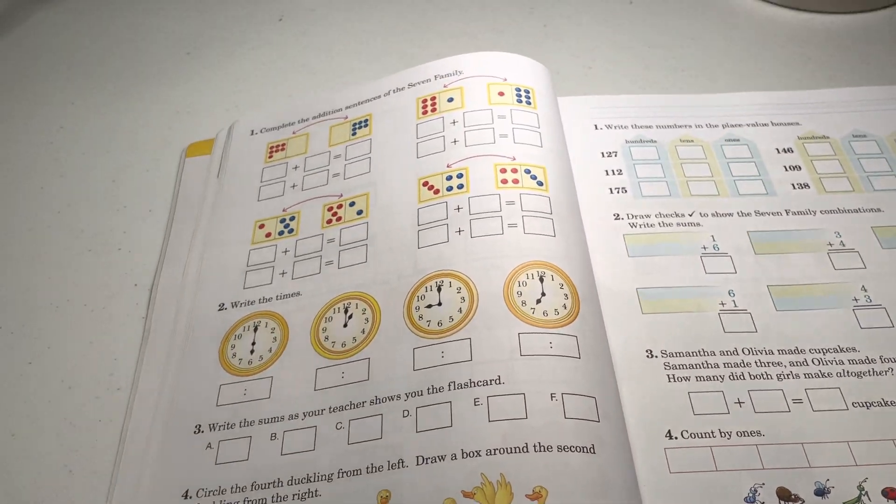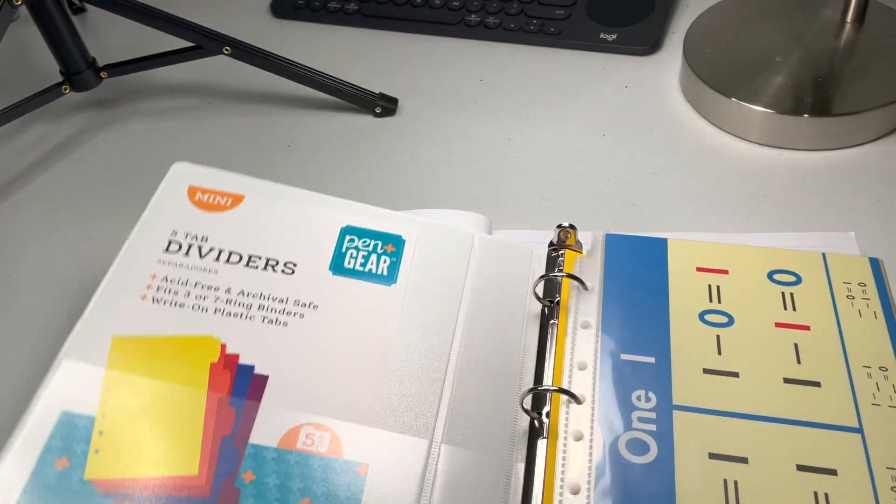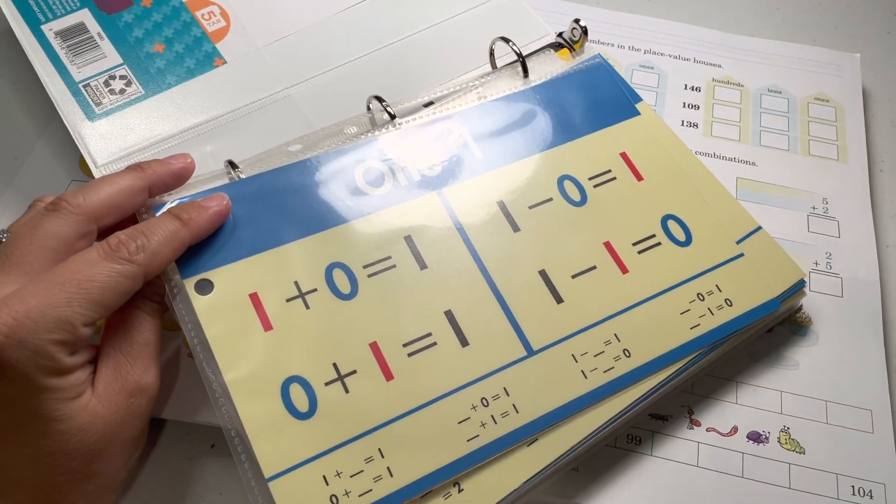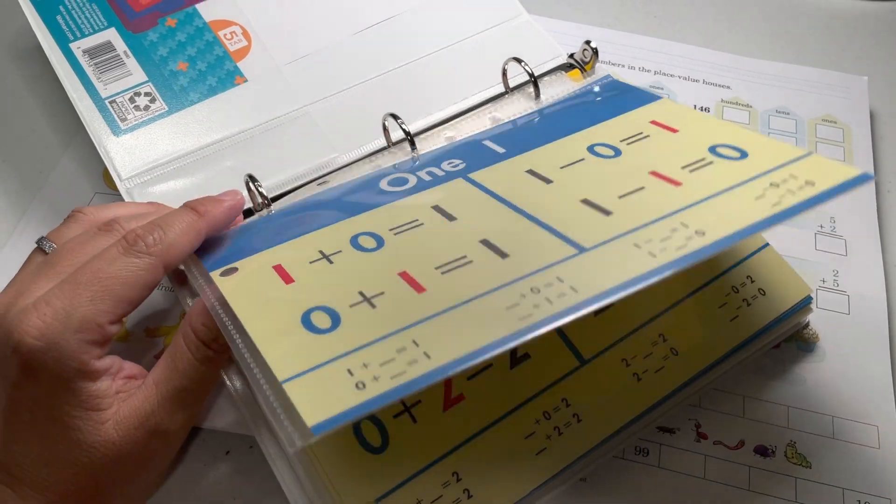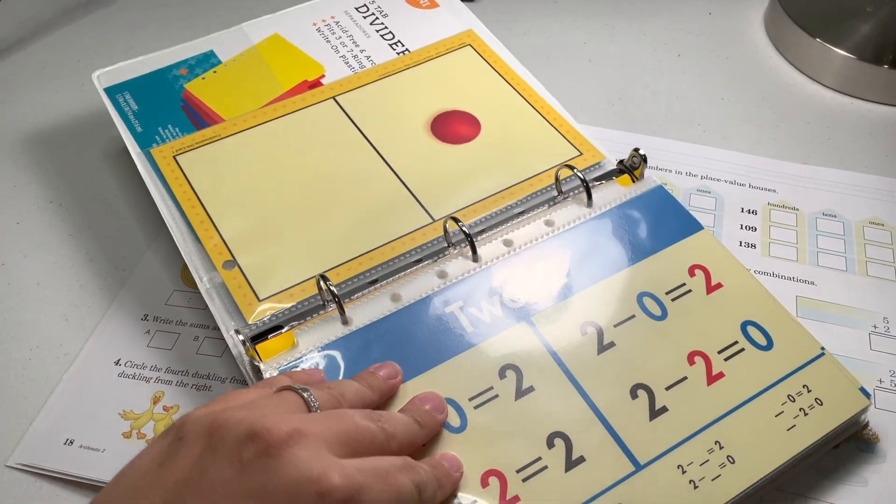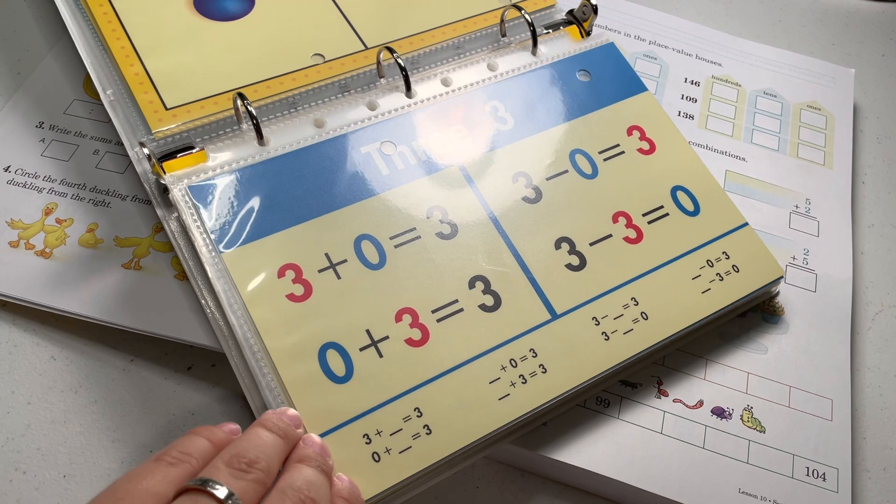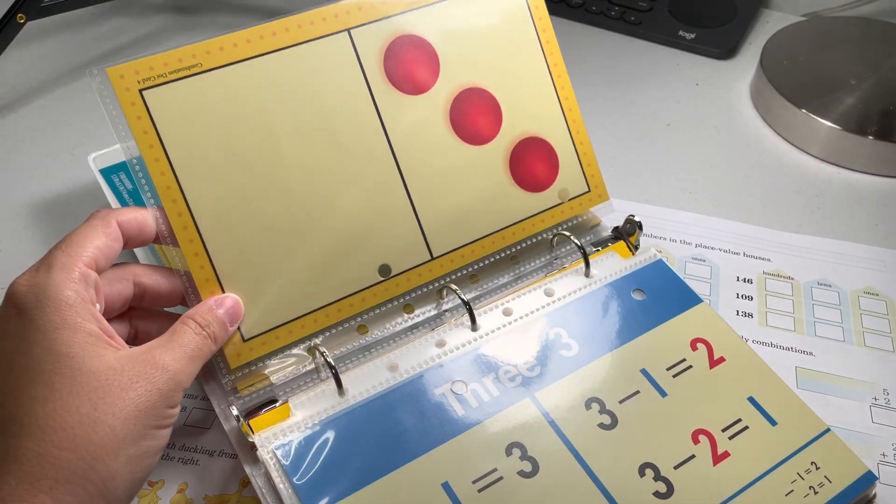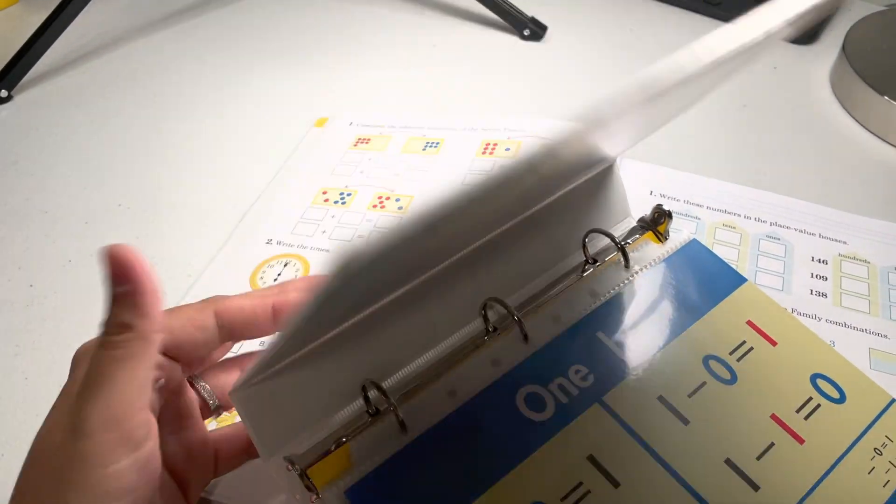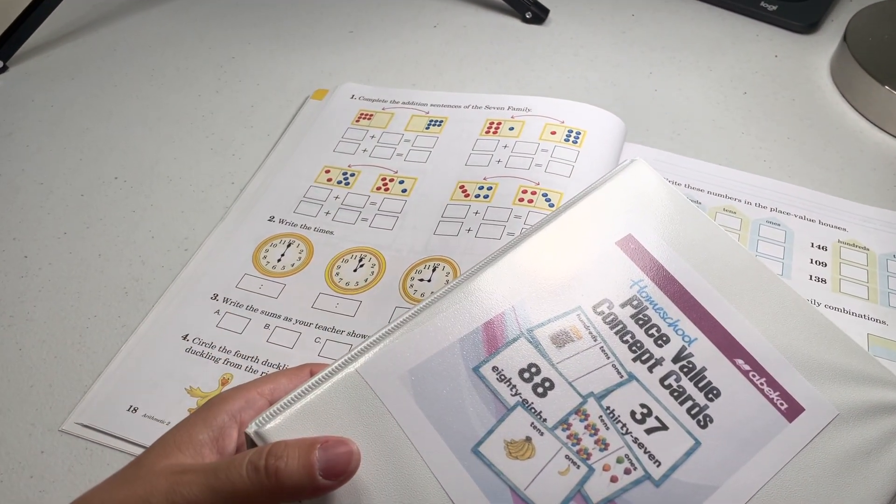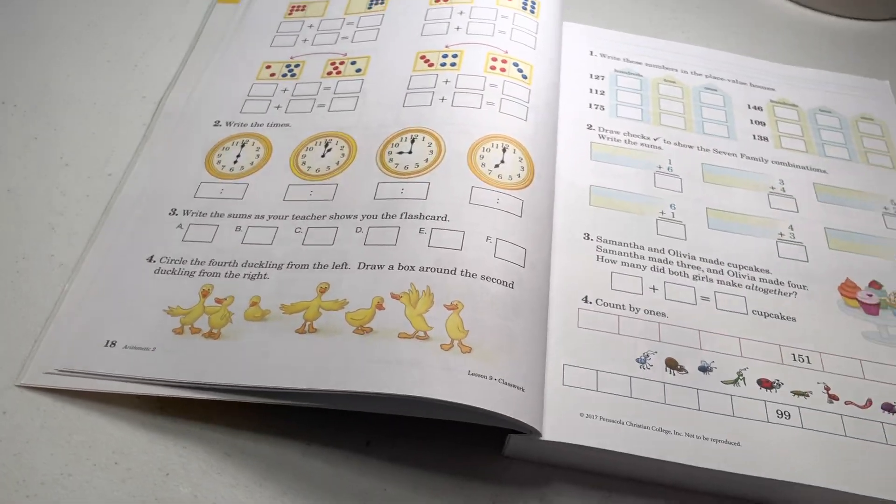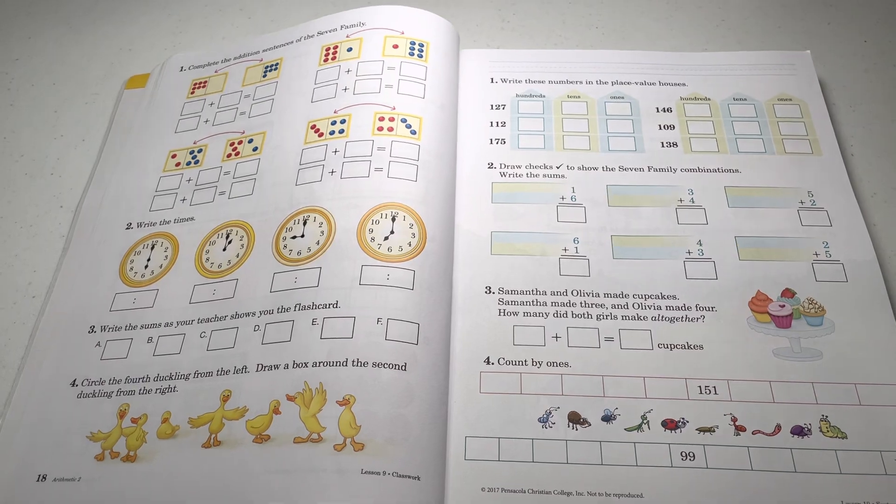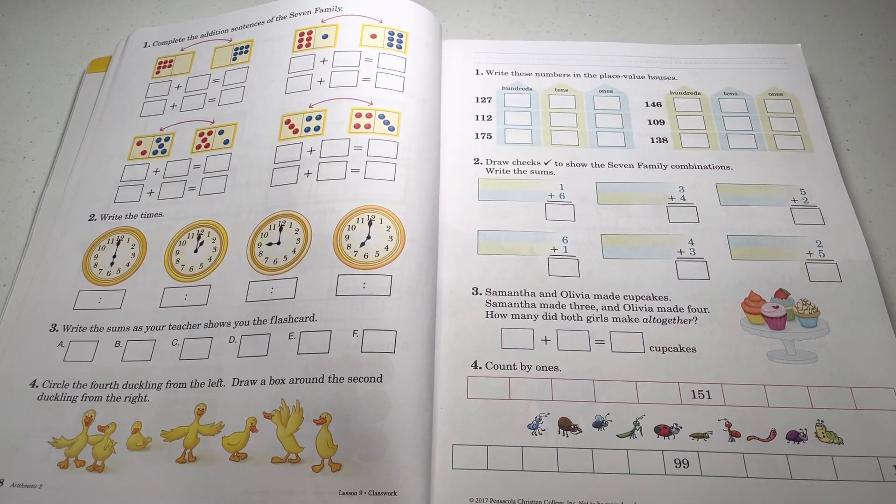And then I have this little binder here where I put in sheet protectors these flashcards. I'm doing a video. Audrey, I'm doing a video. Audrey, I'm doing a video. And next time I'm doing a video, please don't keep interrupting. Close the door. Thank you.